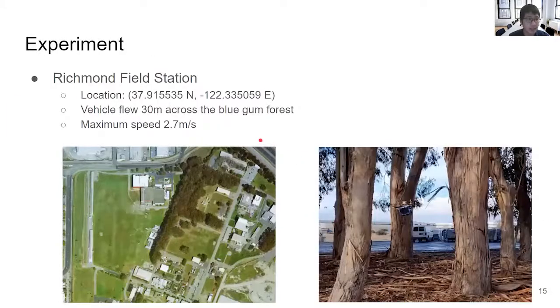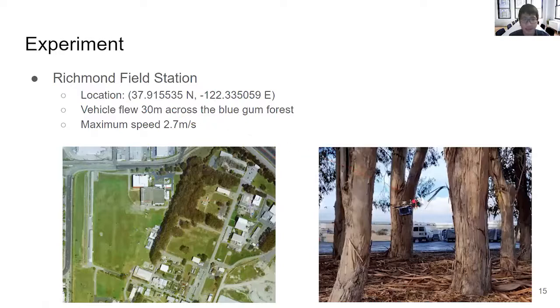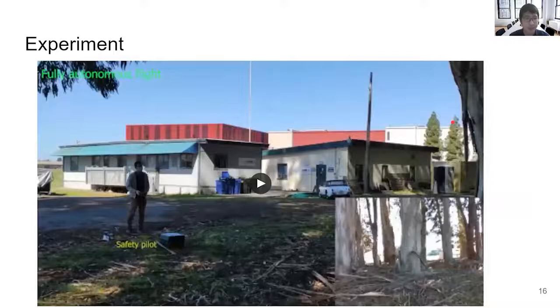The experiments are done at the Richmond Field Station, shown in the figure on the left. In the experiment, the vehicle flew 30 meters across the blue gum forest here, also shown in the figure on the right, from the starting point to the target point on the other side of the forest. Here, let me show some video of the experiment.